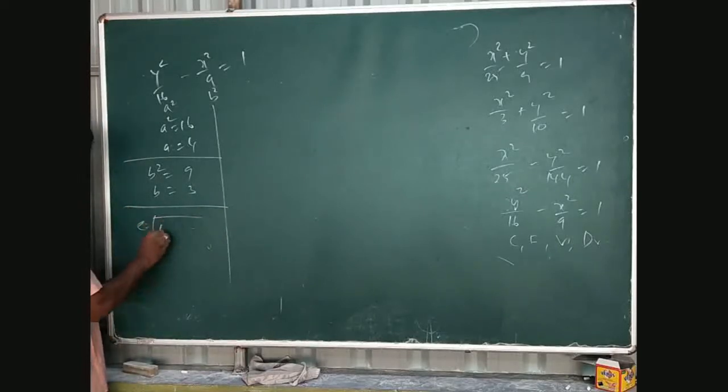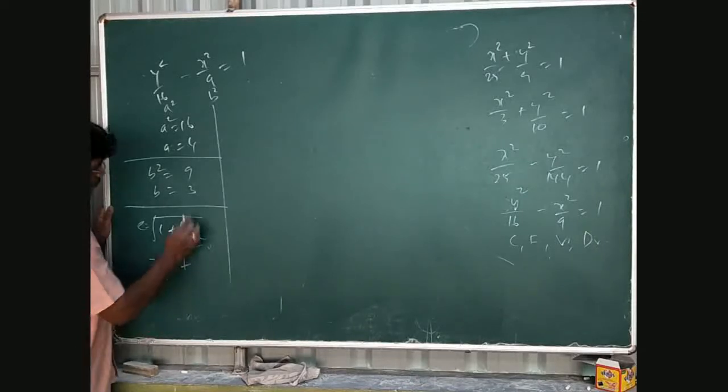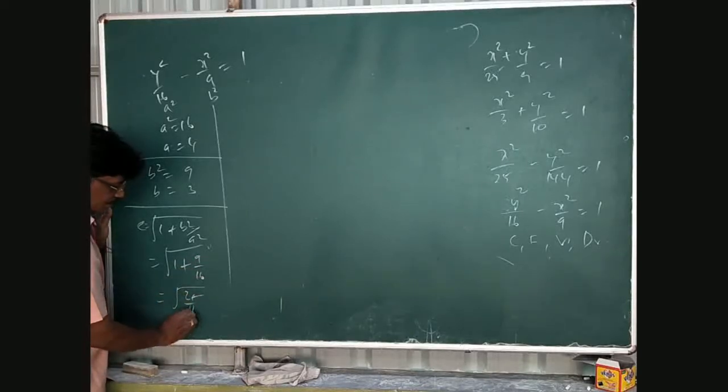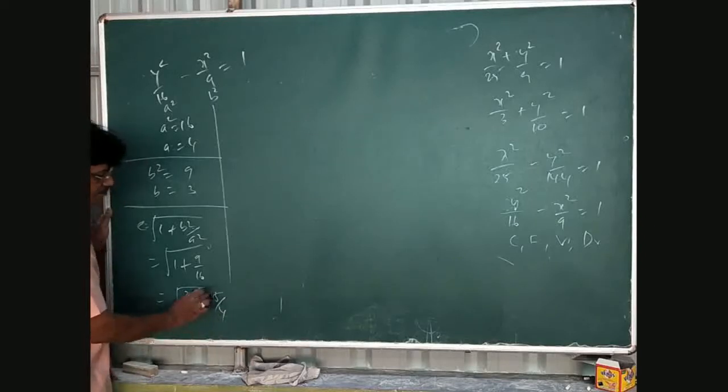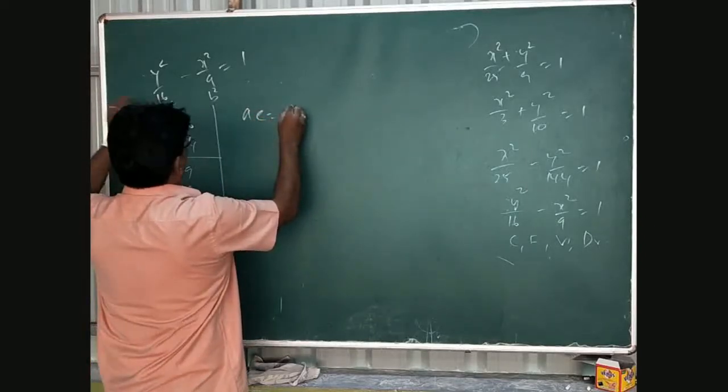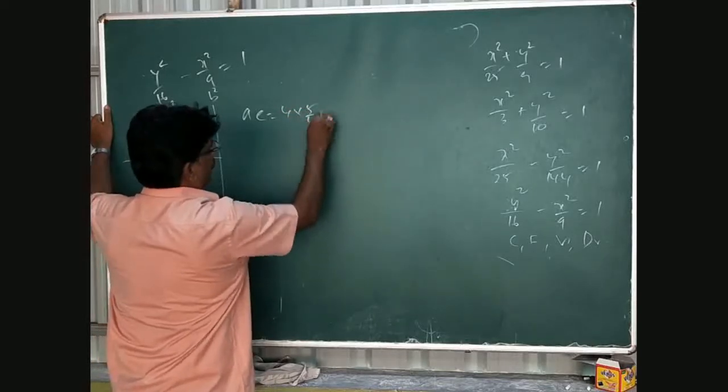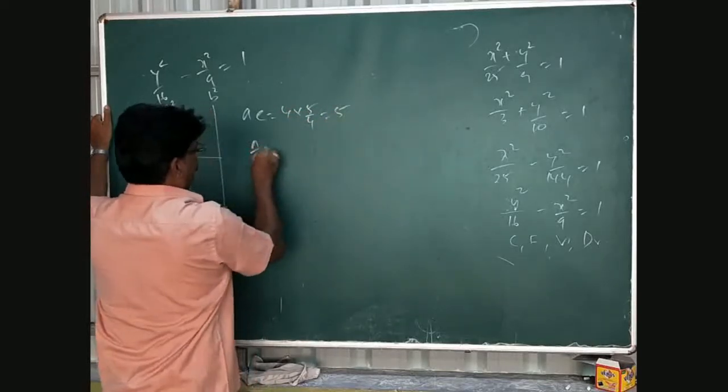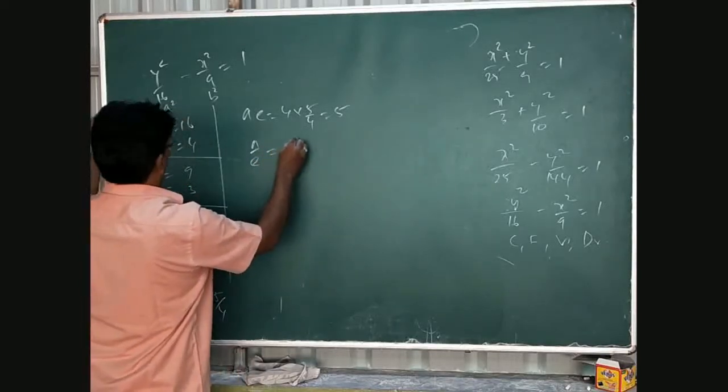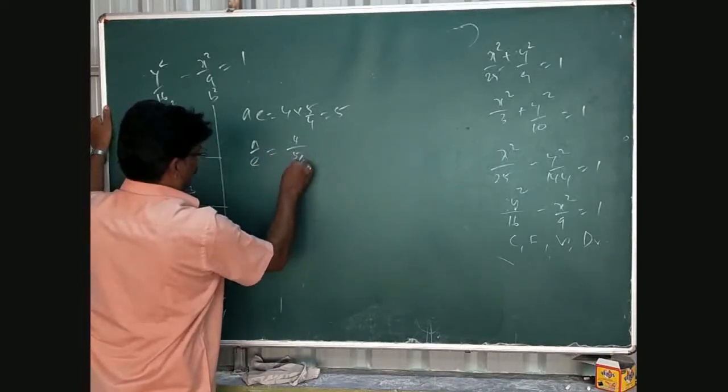Then e equals root of 1 plus b squared by a squared, equal root of 1 plus 9 by 16, root of 25 by 16, equal to 5 by 4. Then ae equals a is what, 4, 5 by 4 equal to 5. A by e equals, e value is what, a value is 4 by 5 by 4, equals 16 by 5.